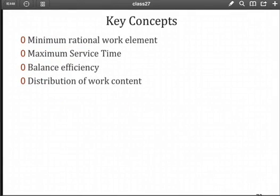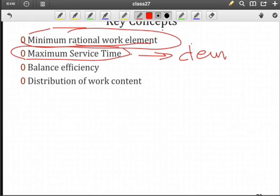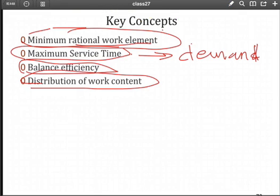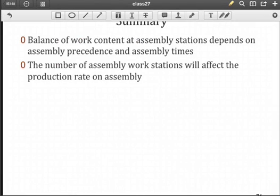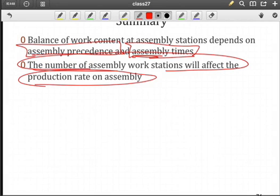So when you're thinking about your assembly system, you need to identify that minimum rational work element. Again, this should be adding value. So you're not considering the handling time, the orientation time, just the total time it takes to assemble that component. That would correspond to the rational work element. Maximum service time that's tied to the demand rate coming out the end of the assembly line. Balance efficiency tells you something about how utilized individual workstations are. And you want to have a reasonable distribution of the work content. It's not going to be perfect, but it has to be reasonable. The balance that we've created in the examples, as you can tell, is based upon the precedence. And that's tied directly to the geometry of the product, as well as the assembly times of individual tasks. You're assuming here that the longer the task time, then the more complex it is. The number of assembly workstations will affect the production rate on assembly as you decrease the number of workstations.